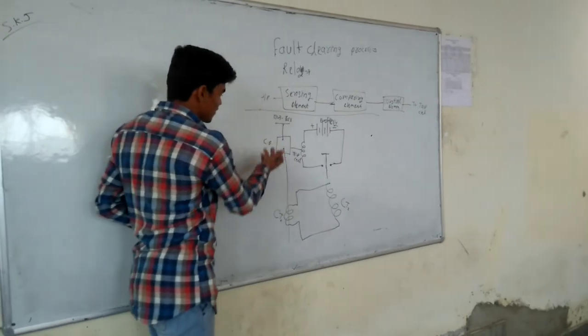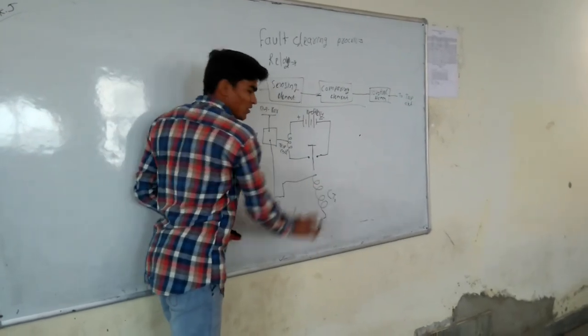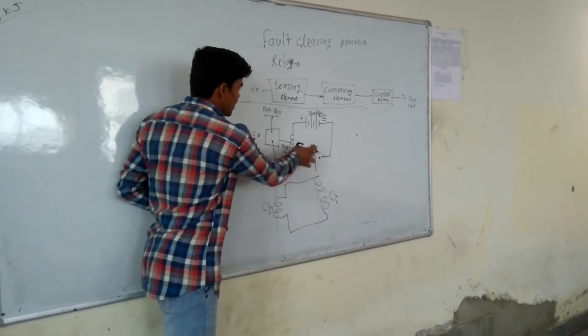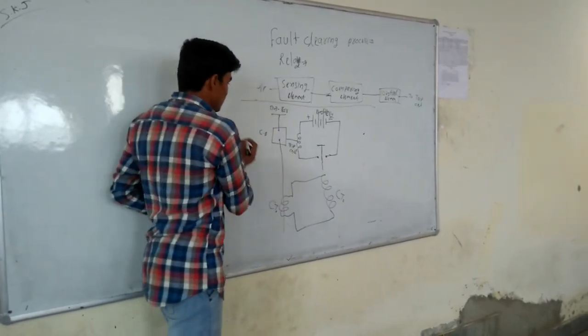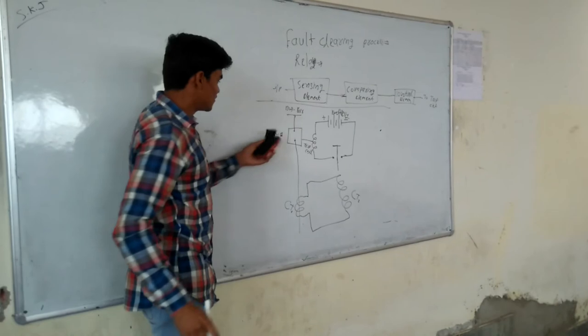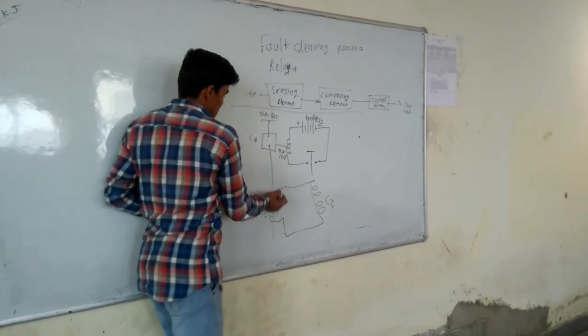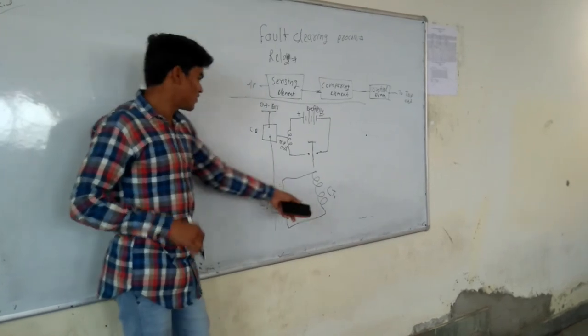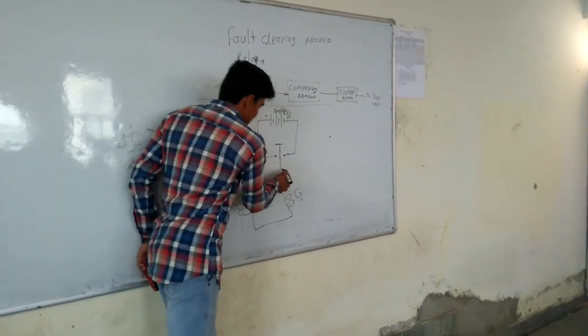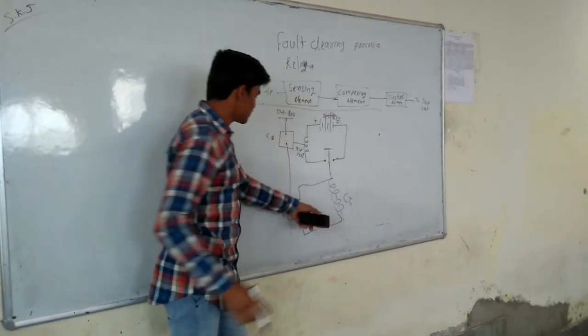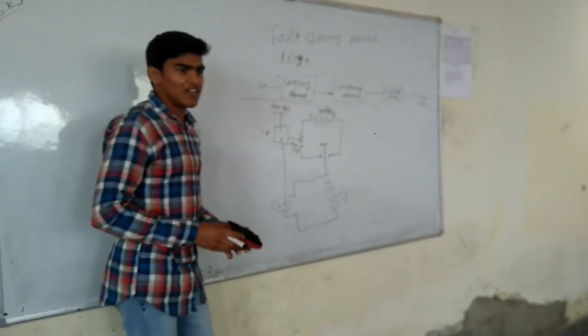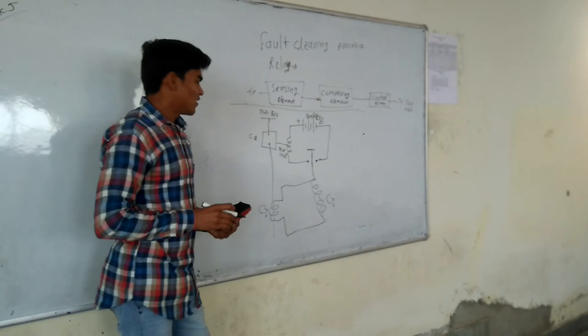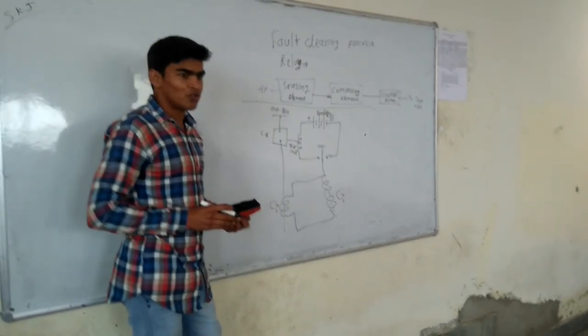In normal conditions, there is no current to the secondary of the current transformer and relay not operated. When you have any fault in this circuit, the excessive current here leads to the secondary of the current transformer. The excessive current is sensed by the relay. The relay sends the command to the breaker to open its contact.